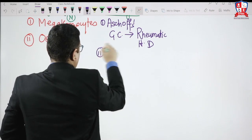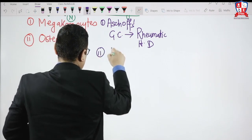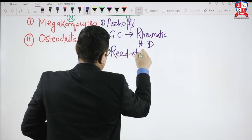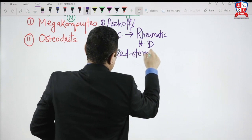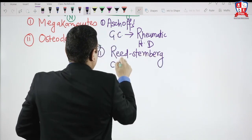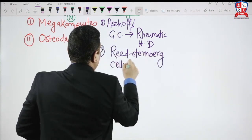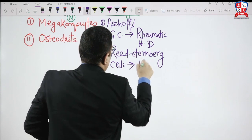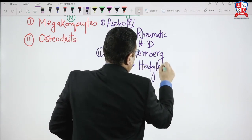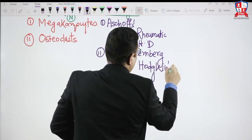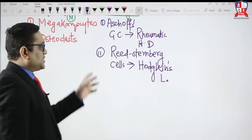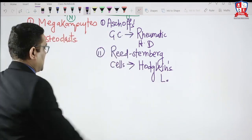Another pathological giant cell is the Reed-Sternberg cell. Reed-Sternberg cells are seen in Hodgkin's lymphoma. This is the second type of pathologic giant cell.